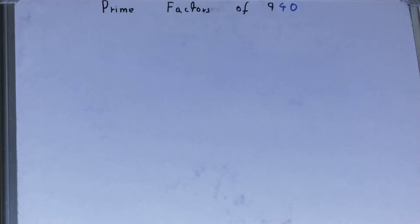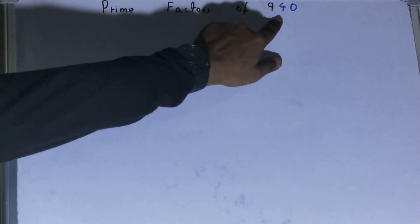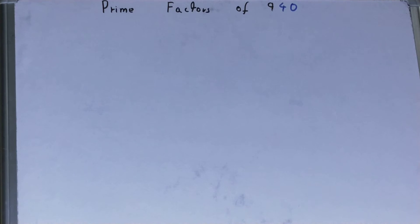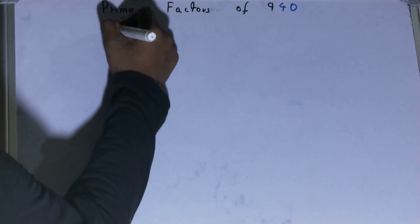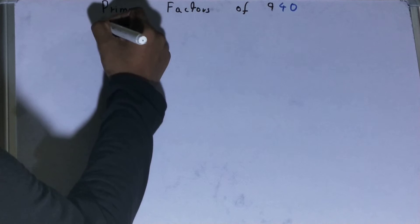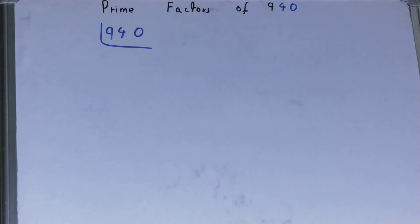Hello friends, in this video I'll be helping with the prime factors of the number 940. So let's start. To find it out, you need to write the number like this. Before solving this any further, you must know what prime numbers are. Prime numbers are numbers that are divisible by 1 and the number itself.